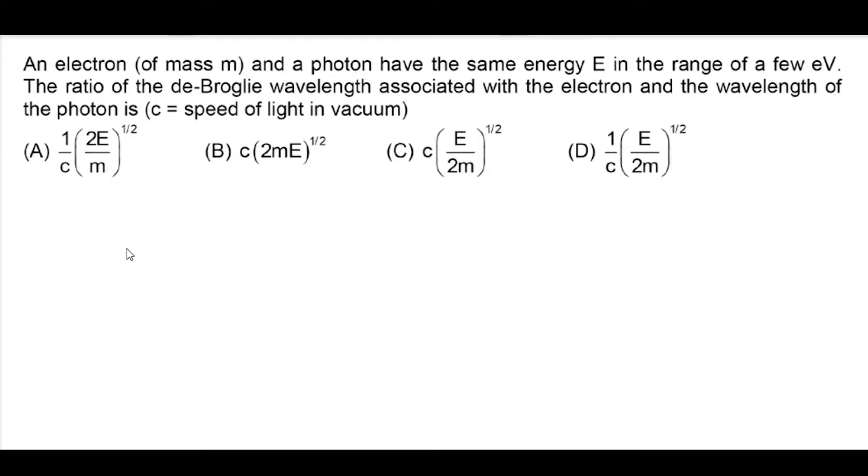We basically need to find de Broglie wavelength of electron by wavelength of photon. For photon, this relation is valid: E is equal to H C by lambda. So we can say lambda for photon is equal to H C by E.